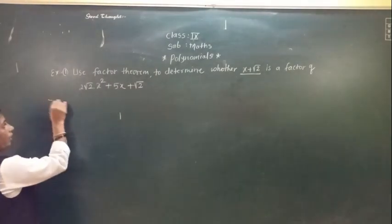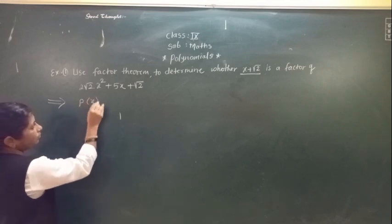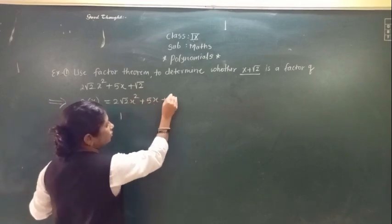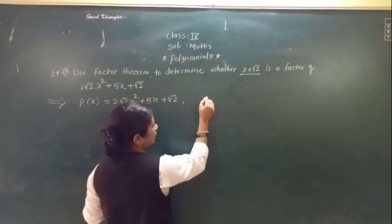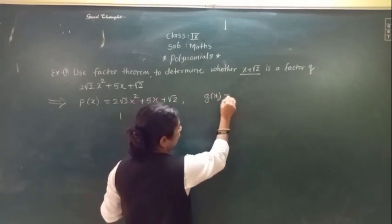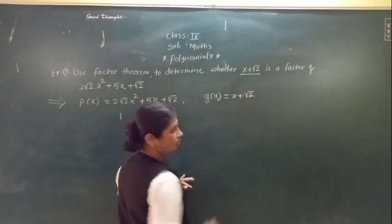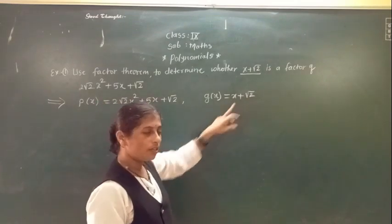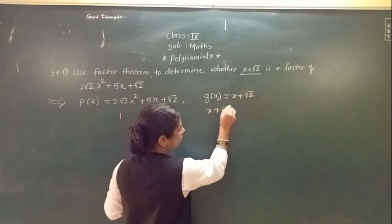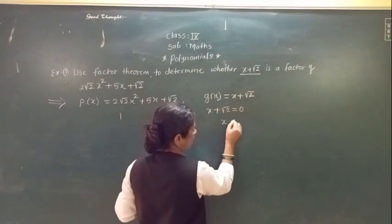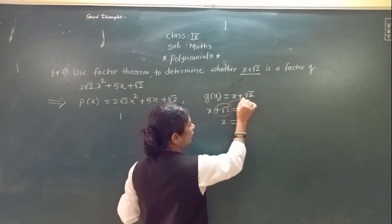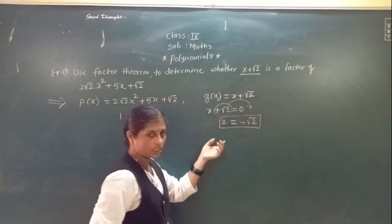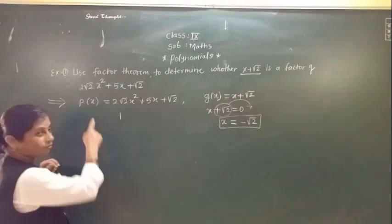So here, P(x) = 2√2x² + 5x + √2, and the given factor G(x) = x + √2. We need to find the value of X from x + √2 = 0, which gives x = −√2. This is the value of X we have to substitute into the given polynomial.